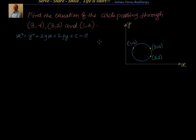We will look at the first method. As part of the first method, we will leverage the general form of the circle, that is x² + y² + 2gx + 2fy + c = 0. We will say the equation of the circle is x² + y² + 2gx + 2fy + c = 0, and all 3 points lie on the circle. Since these 3 points pass through the circle, they should satisfy the equation of the circle.